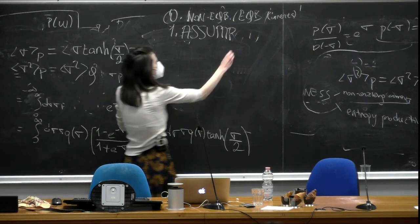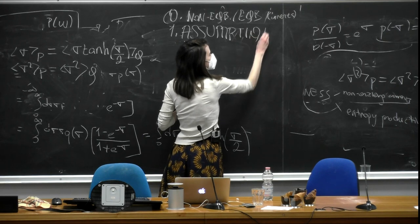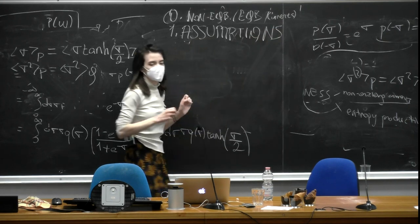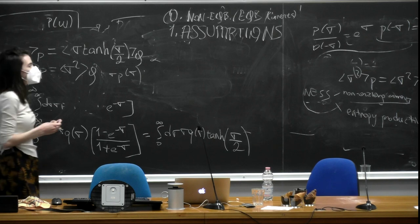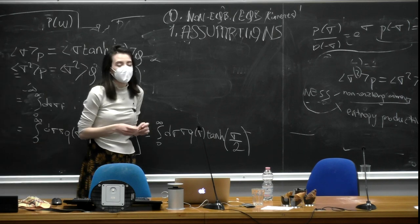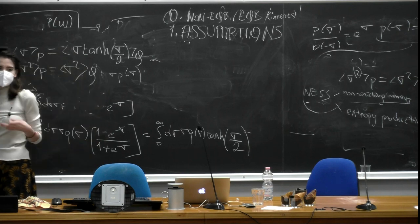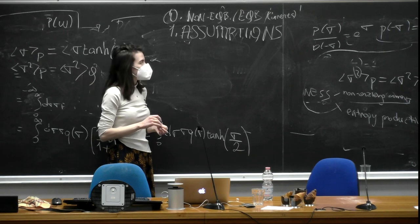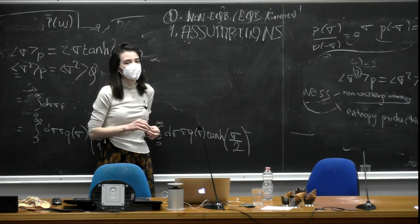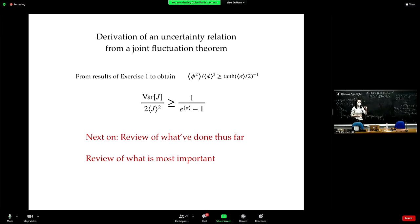Know what the assumptions are for the TURs — for example, the non-equilibrium steady state and the FTUR — and understand why these assumptions matter. I will send the complete slides and derivations on the Slack channel. Understand how you use fluctuation theorems as resource constraints to derive different sets of resource constraints.